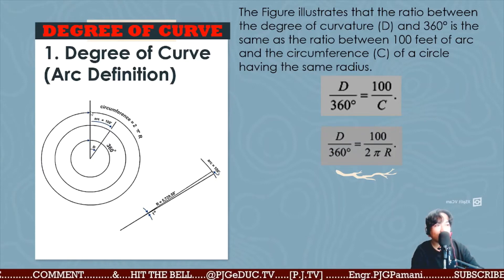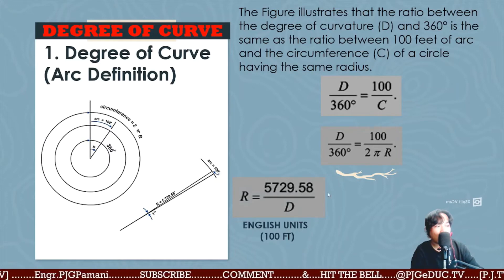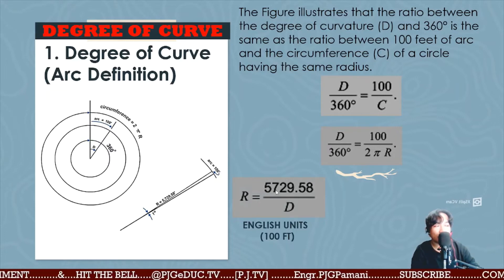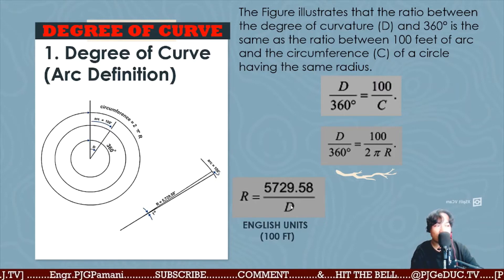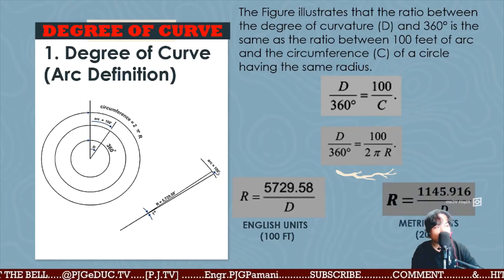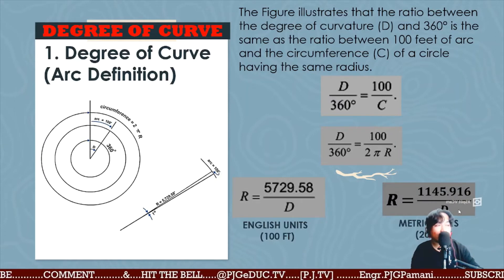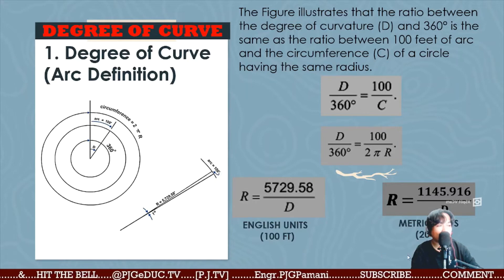Using 2πR for the circumference, for the English unit the formula is: radius = 5729.58 divided by the degree of curve. Once you identify the degree of curve, use this formula under the arc definition to solve the required radius of the simple curve. For metric units using a 20-meter full station: radius = 1145.916 divided by the degree of curve. That is the difference between them — this applies to the arc definition.